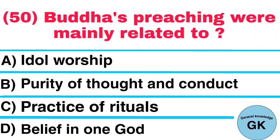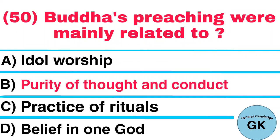Question number 50. Buddha's preachings were mainly related to: A. Idol worship, B. Purity of thought and conduct, C. Practice of rituals, D. Belief in one God. Answer: Purity of thought and conduct.